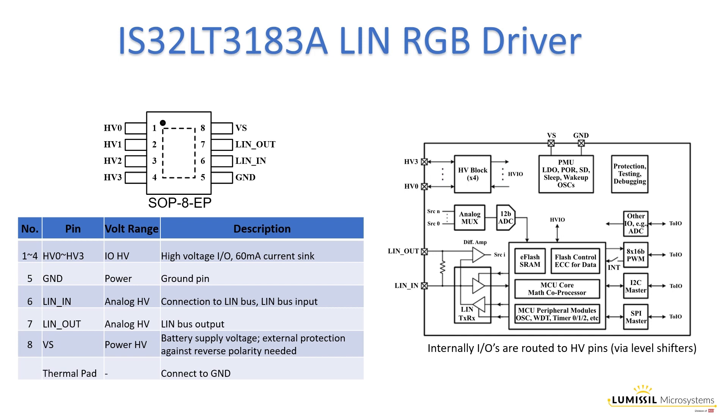The IS32LT3183A integrates all the required LIN modules, such as LIN transceiver compliant to all the latest standards up to 2.2A and SAE J2602, a LIN termination resistor, voltage regulator LDO, MCU, memory storage, and certified LIN compliant software stack. Each nibble of 32 kilobyte flash memory code is protected by double bit ECC for reliable operation under harsh automotive conditions.